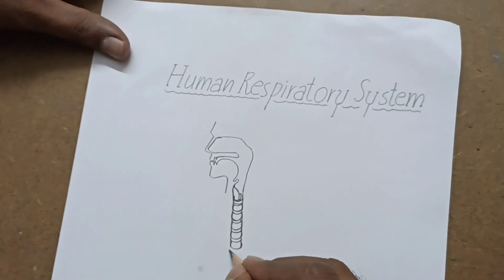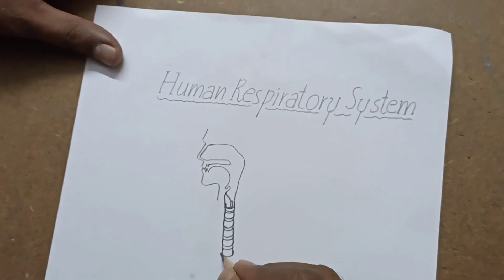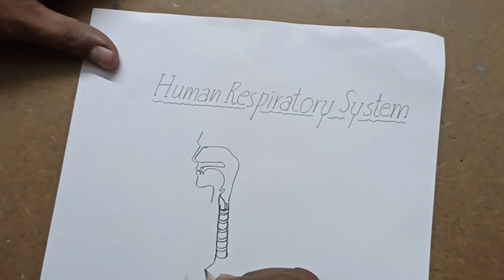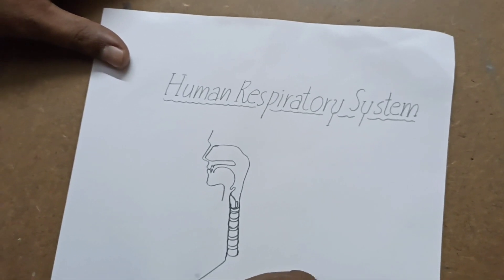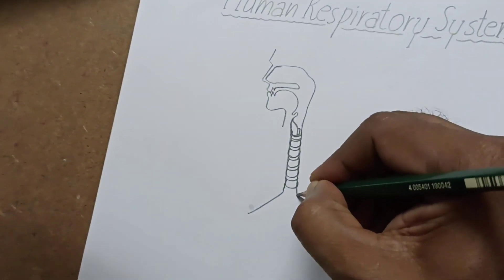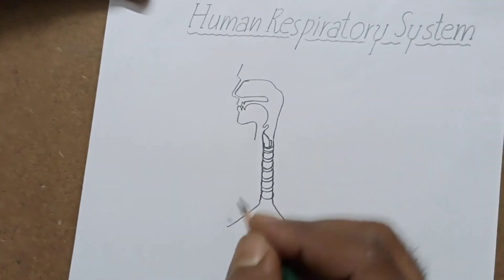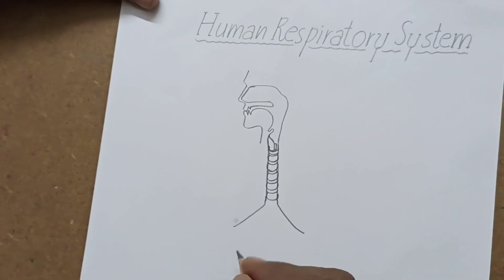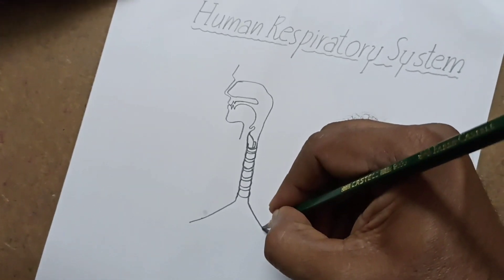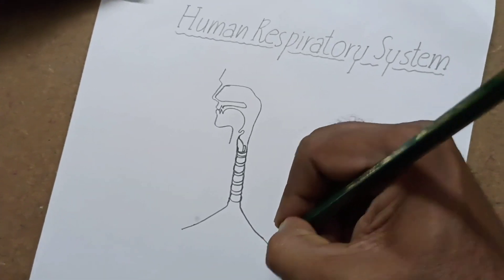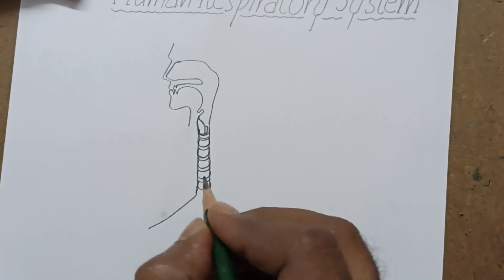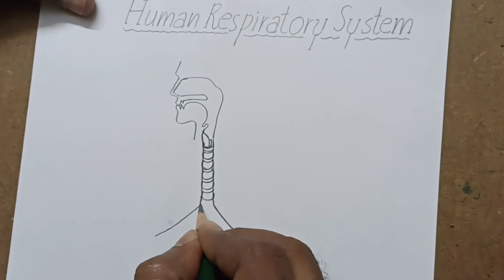From here we have to divide this trachea into two tubes like this. These are bronchi — draw the bronchi like this.